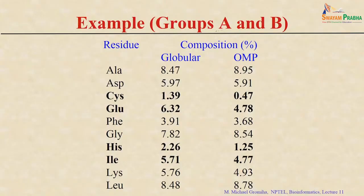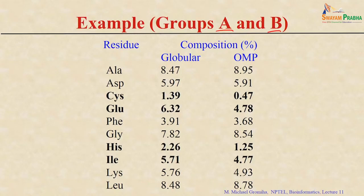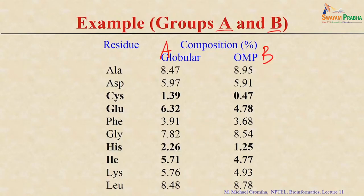If I take two groups, group A and group B, I collect all the proteins in UniProt belonging to each group. Then from all these sequences I can calculate the composition — count N of each residue type, normalize by N, and you will get the composition. For example, if you take alanine: for group A the value is 8.47 and for group B it is 8.95. If you consider the standard deviation, this will be plus or minus 0.102, so you get similar numbers in this case.